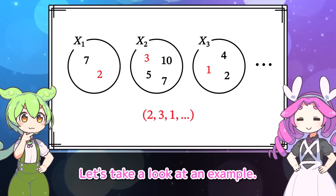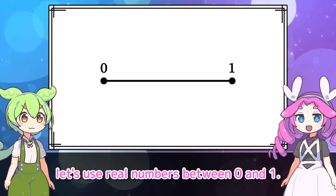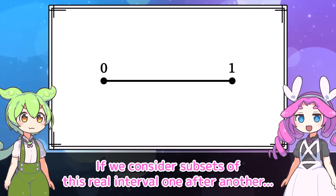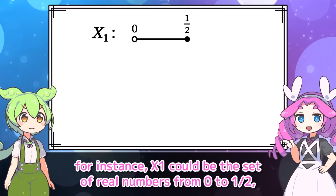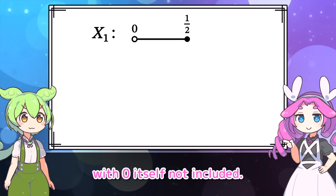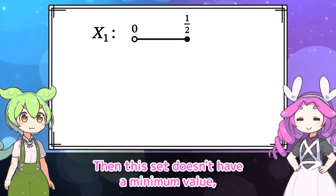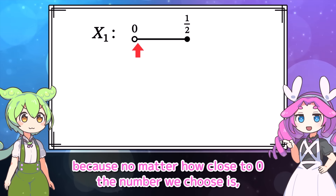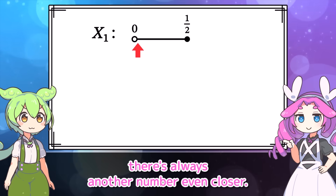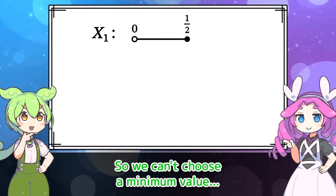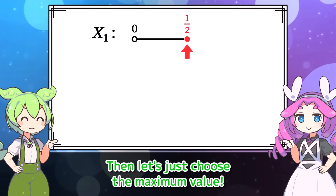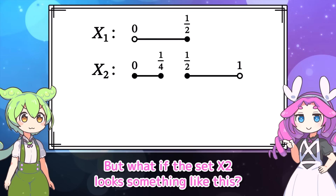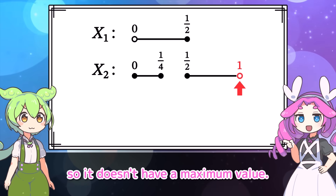But such an explicit construction isn't always guaranteed. This time, instead of natural numbers, let's use real numbers between 0 and 1. If we consider subsets of this real interval one after another — for instance, X sub 1 could be the set of real numbers from 0 to one half, with 0 itself not included — then this set doesn't have a minimum value, because no matter how close to 0 the number we choose is, there's always another number even closer. So we can't choose a minimum value. Then let's just choose the maximum value. But what if the set X sub 2 doesn't include 1, so it doesn't have a maximum value?